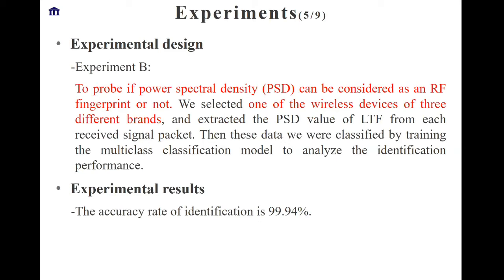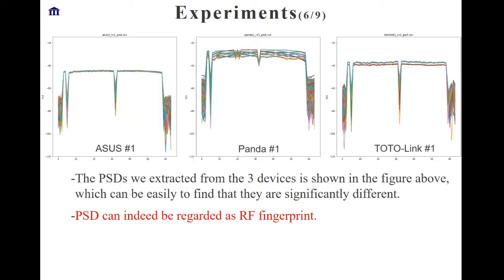Experiment B is to verify whether Power Spectral Density (PSD) can be considered as an RF fingerprint. It uses one wireless device from each of three different brands and a fixed receiver to obtain data. The accuracy rate of identification is about 99% by the classifier. From the figure, it is easy to see that the three PSDs are significantly different, so we can say that PSD can indeed be regarded as an RF fingerprint.